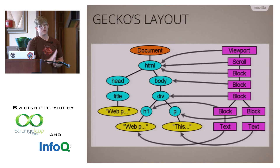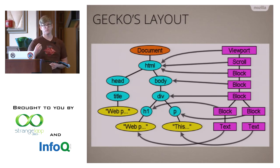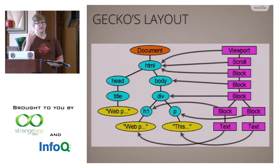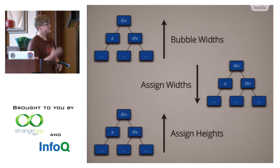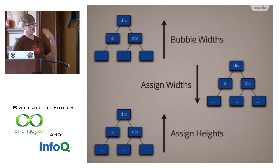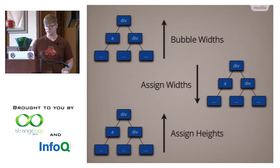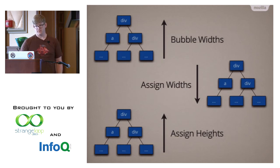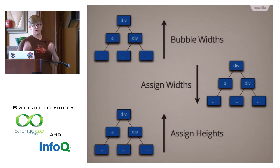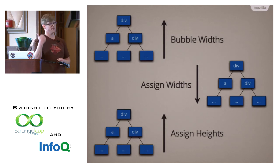In Servo, we have a separate data structure called the flow tree, but our traversals are quite different. Our goal is to design this structure so that traversals are really simple, easy to express, and easy to parallelize. The traversals have three passes: first, you go bottom-up and tell your parent how big you want to be — bubbling up preferred and intrinsic widths to the top of the tree. Once you have all those, you can go back down and assign widths. Then once you get all the way back to the bottom, you go back up and assign heights.